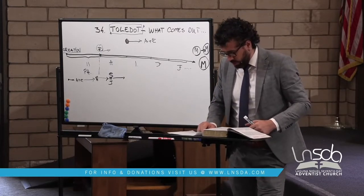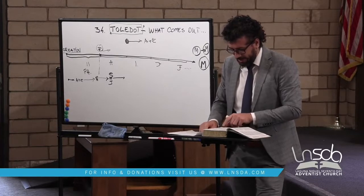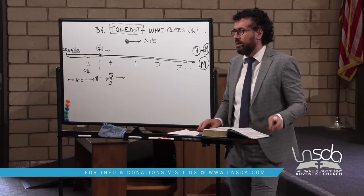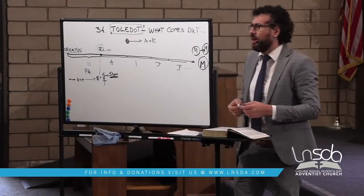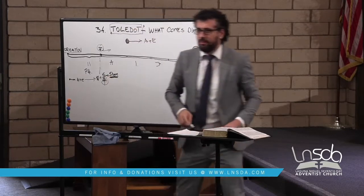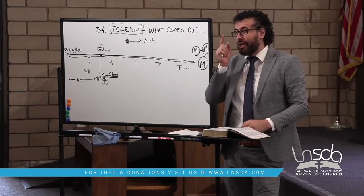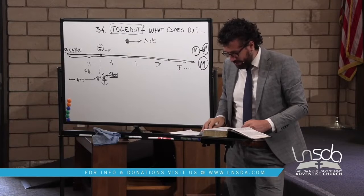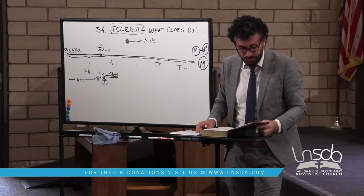The next Toledot is chapter 11, verse 10: 'This is the genealogy of Shem.' Interestingly, it is narrowed down to Shem — it does not continue with Ham and Japheth. Why are two of them dropped and one continued? That line goes somewhere. The line of Shem goes to Terah, and there is the next Toledot in verse 27 of chapter 11: 'This is the genealogy of Terah.'